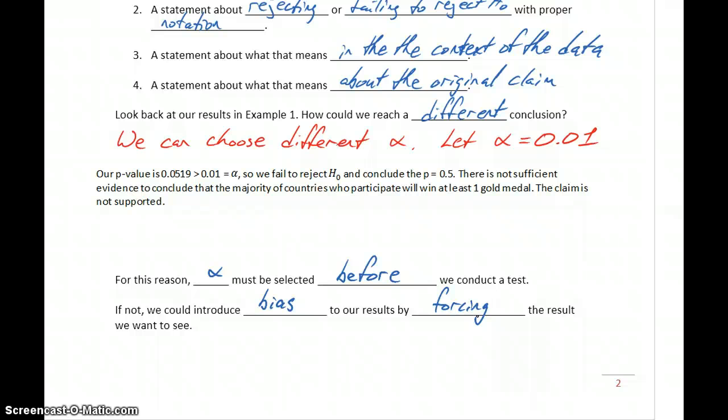Or similarly if we have a pharmaceutical company who's developing a new drug they start going to clinical trials, they are obviously very invested in trying to demonstrate that their product works. So if there is the possibility that they could manipulate those results or bias their results at the end to get that result that they're more interested in seeing, we have to be aware that's a possibility.